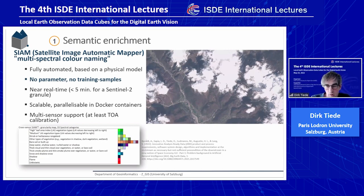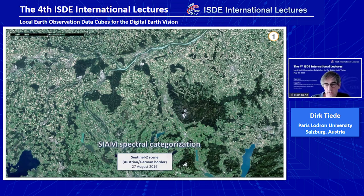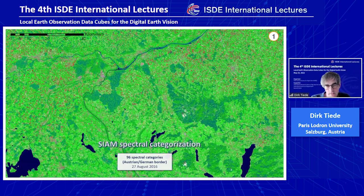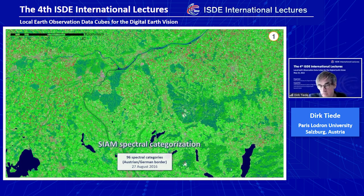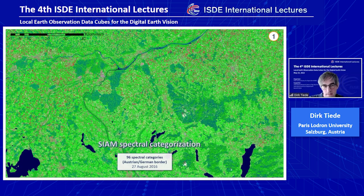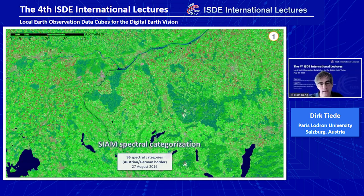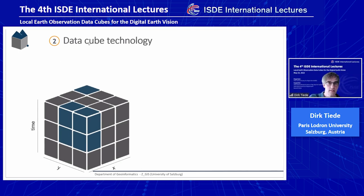Here is another overview on the Austrian-German border — an older Sentinel-2 scene — showing how the spectral categorization looks. Keep in mind: this is not a land cover classification; it is pixel-based, not looking into context. So even if we as humans see a lake or a river, per pixel we only have spectral categories like deep water or turbid water. But if we aggregate and analyze through time, we reach a higher semantic level and can draw more conclusions. I will now hand over to Martin, who will explain more of the technical aspects of the data cube technology.